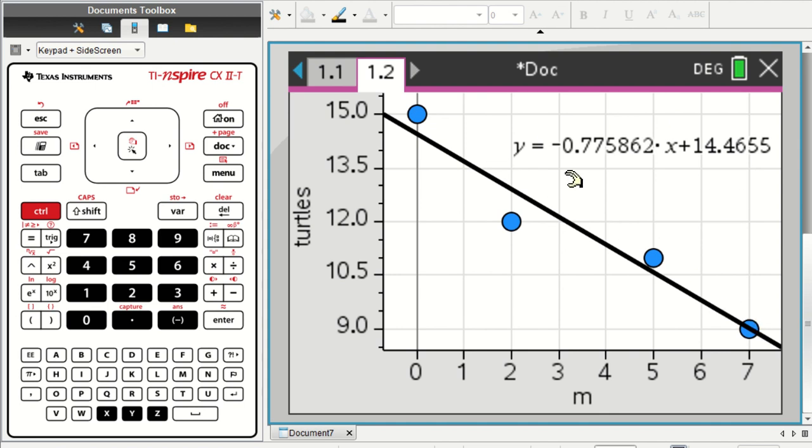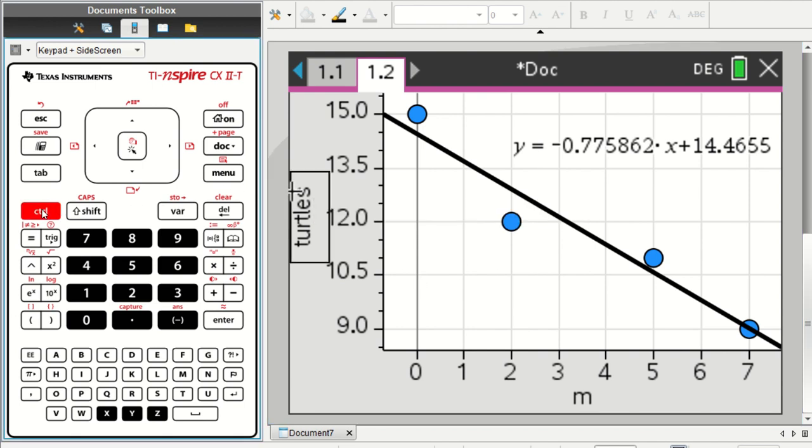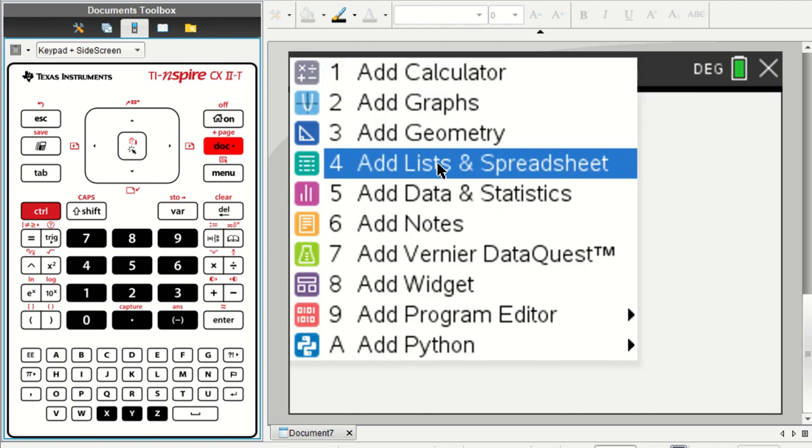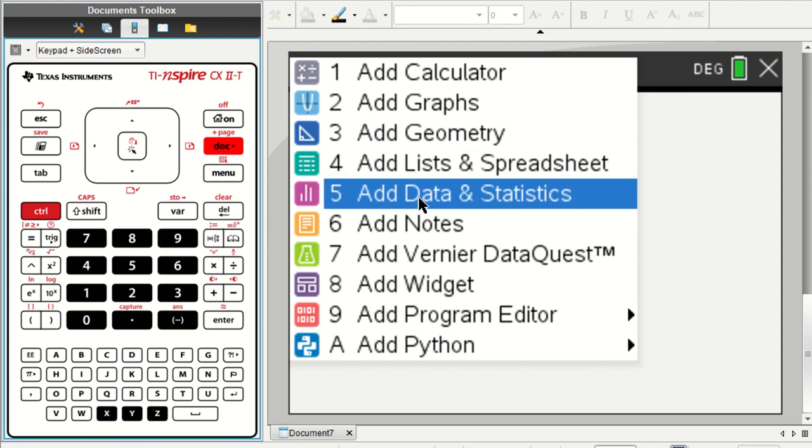To do a little bit more work, a little more precise work, we're going to add yet another page. So I'm going to go to Control and Plus Page. We started by adding data in this type of page, a list and spreadsheet, and then we visualize the data in the Data and Statistics page.